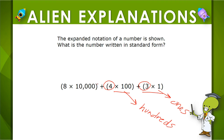Or we can look at the sum. We look at 3 times 1 is 3. 4 times 100 is 4 groups of 100 — 4 hundreds. And then we can find this value and just find the sum.